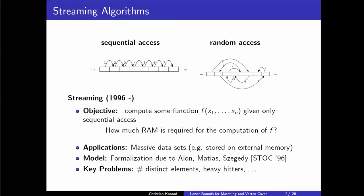The key problems traditionally studied were more statistical type problems. Can we approximate the number of distinct elements? Can we compute the most frequent elements in a data stream using small space? Maybe can we compute the frequency moments, et cetera? But what we're discussing in this talk are graph streams — we want streaming algorithms for graphs.